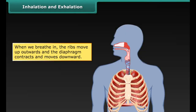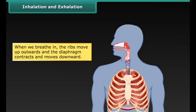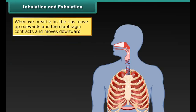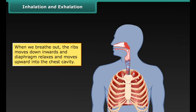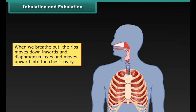When we breathe in or inhale, the ribs move up and outwards and our diaphragm contracts and moves downward. This increases the space in our chest cavity, into which our lungs expand. As our lungs expand, air is sucked in through our nose or mouth and travels down the trachea into our lungs.